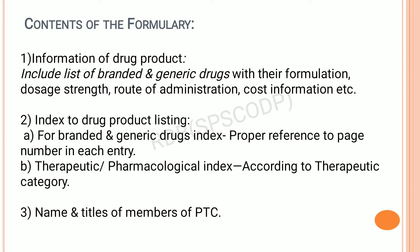The hospital formulary should contain thorough information about the drug product, which includes the drug name — i.e., brand name and generic name — along with their formulation or composition of that particular drug, dosage strength, route of administration, cost information, etc.